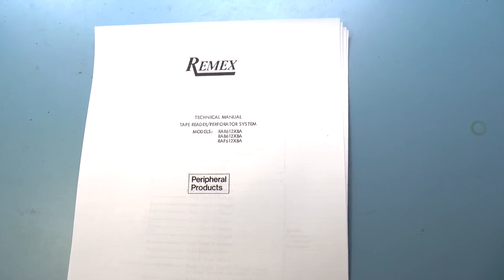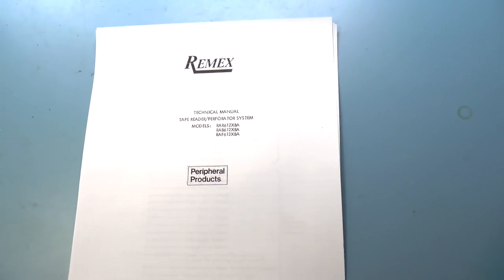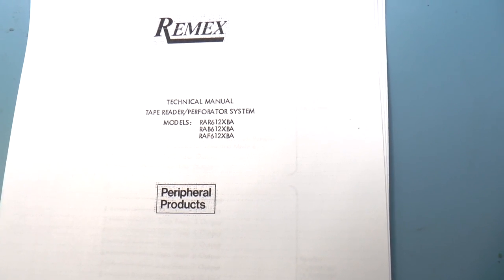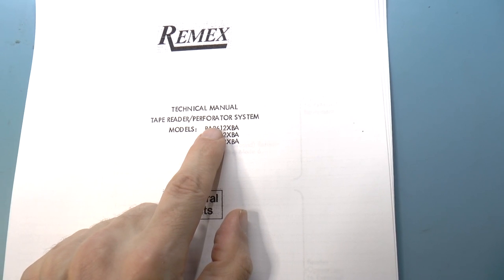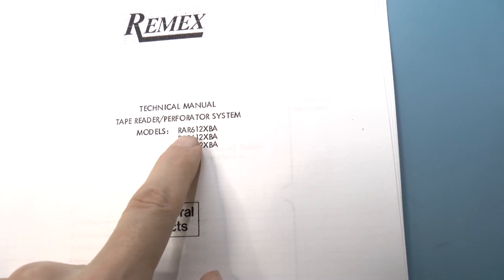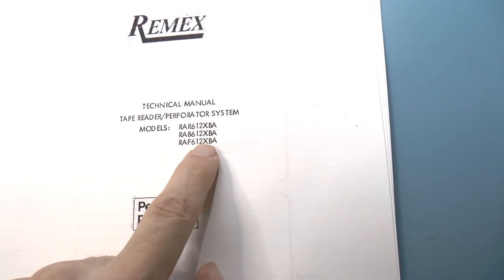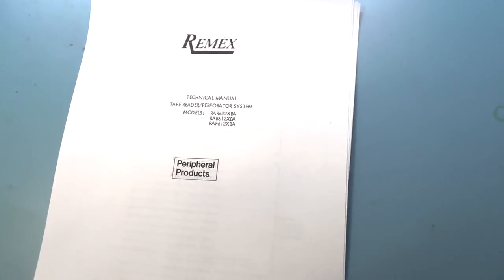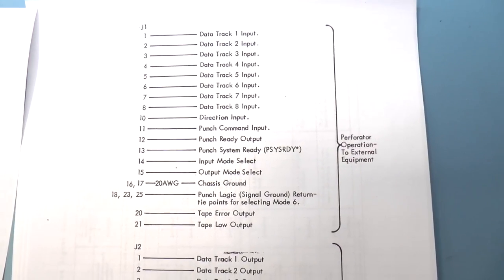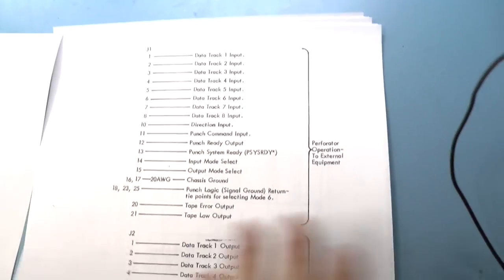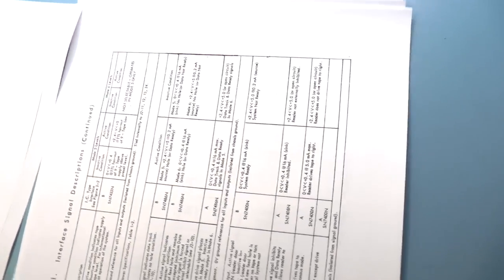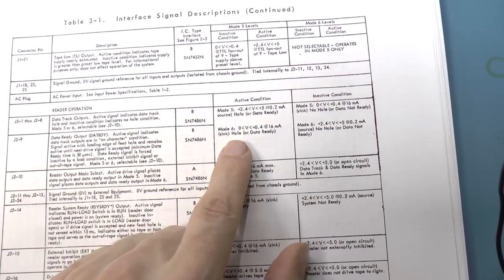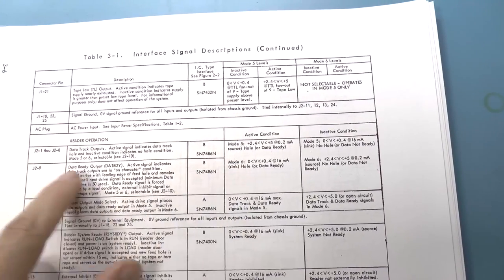So, I was on bitsavers.org because their files are a little bit more organized than on the Internet Archive. And I found this manual, which actually is very virtually a match for the thing that I have. Again, this is a tape reader perforator combination, but the model number here is RA something 612X, X being some number and mine is an RPS 6122, so this is an extremely close match. And what we have are the signals over here, which correspond to the signals that come out of this logic board. So now I have all the signals. In addition, this is also very interesting. We see down here that there are actually two modes, mode 5 and mode 6, and that really only says whether the data track outputs for the reader are inverted or not.